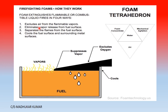Once that separation is in place, the vapors cannot catch fire. The foam eliminates vapor released from the fuel surface and separates the flame from the fuel surface — covering it up so no flame is available. It also cools the fuel surface and surrounding metal surfaces. Here you can also see the famous foam tetrahedron: in the center is water, and on the sides are air, foam concentrate, and mechanical agitation — all three are required to combine with water for foam to be generated. These are the ways by which foam cuts off and extinguishes fire.